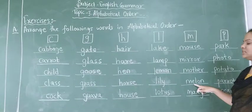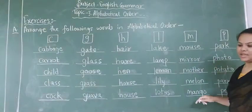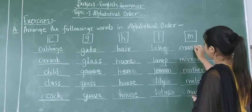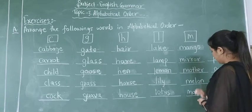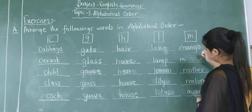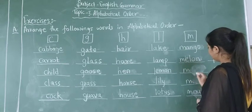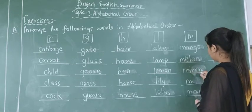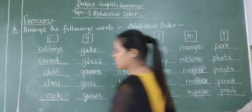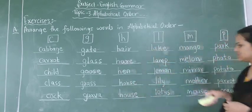Then jump to the M letter words. M ke baad aana chalye A, so here is mango. So mango we will write first, then melon second. Then I, here is mirror, we will write third. Then mother in the fourth and mouse in the last. So in this way we have arranged all the words in the alphabetical letters.